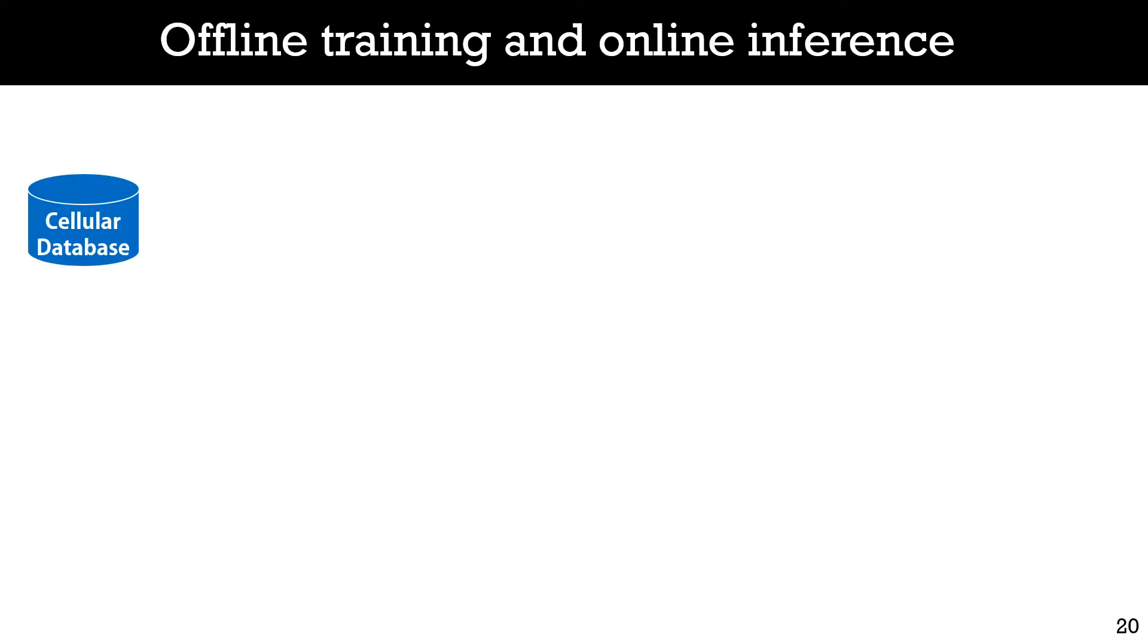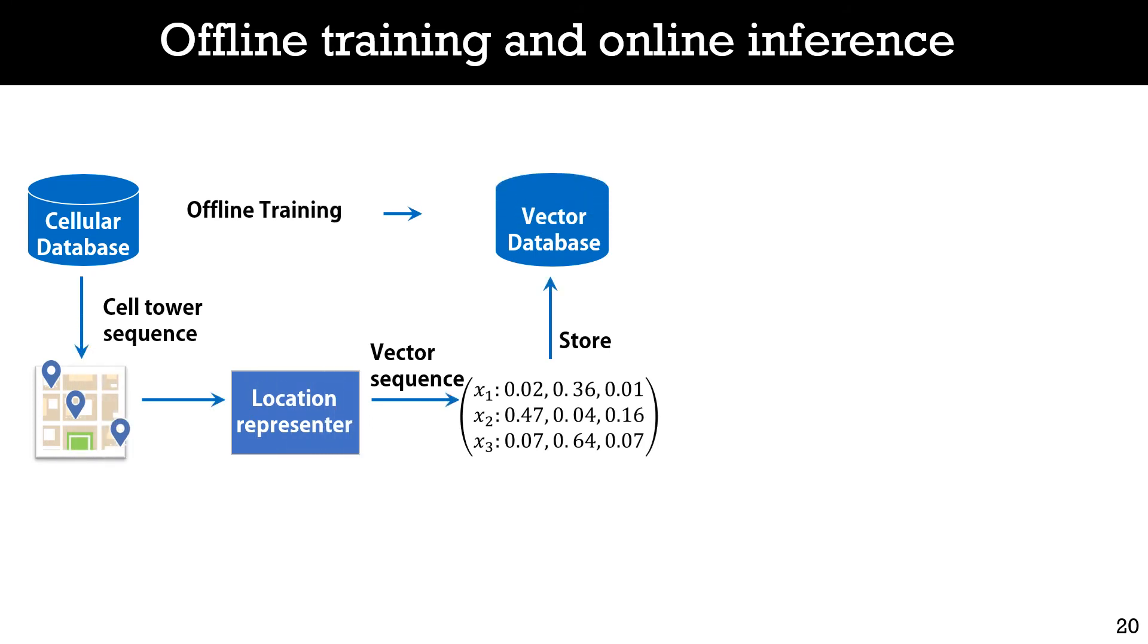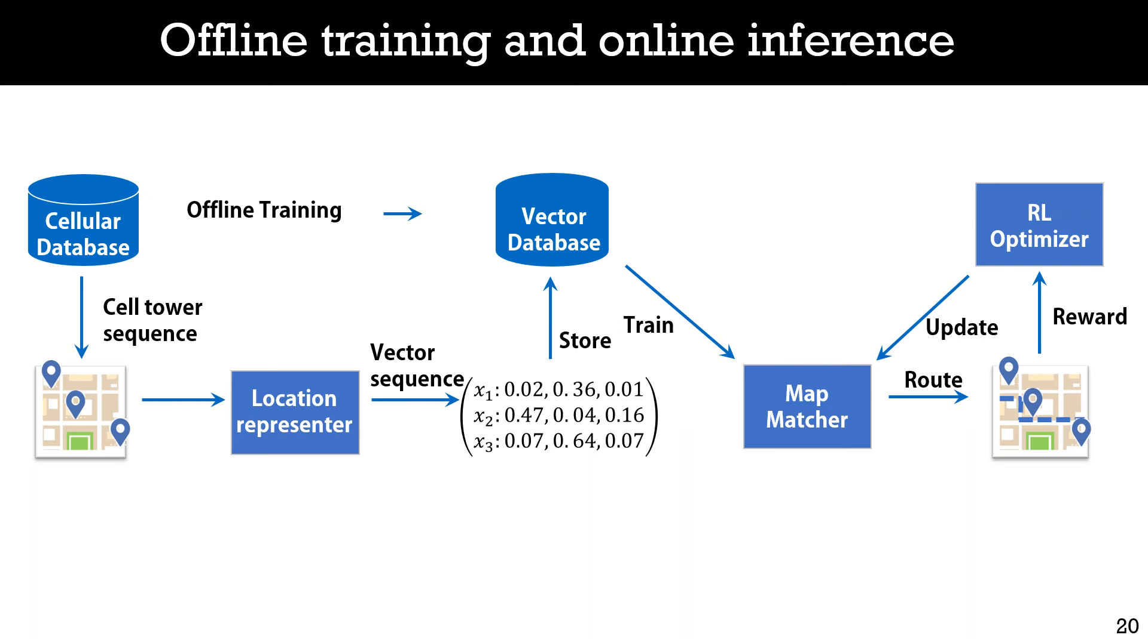Based on the above three models, we present our system. Given the cell tower sequence in the cellular dataset, during offline training, we first learn a location representer to capture high-quality representations for cell towers. By using the location representer, we transform all the cell tower sequences into vector sequences and store them into a vector sequences dataset. Then, we learn a recurrent map matching model to generate the most likely road sequence on the road map. The vector sequences as well as the estimated ground truth labels generated from a hidden Markov model are used to train the model. Finally, we customize the map matching model into a reinforcement learning framework to refine the map matching results. Note that the training of the model can be conducted offline without impacting the speed of online inference.